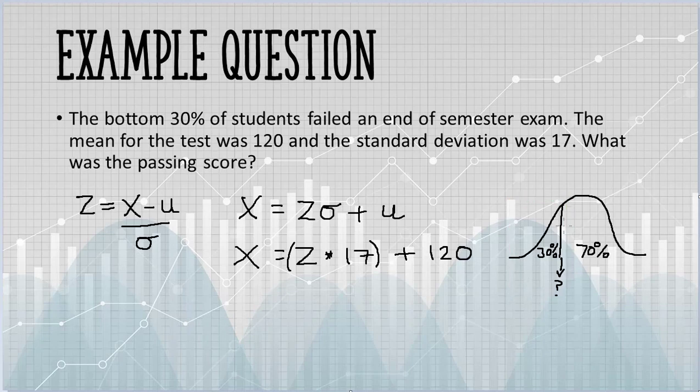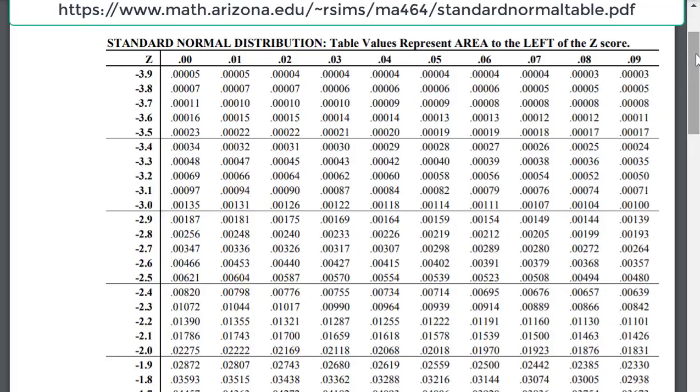In order to do that, we look in a z-table. There are a few versions of a z-table, so make sure you're looking at one that cuts off a point left of the z-score.